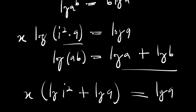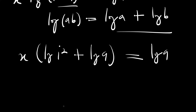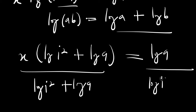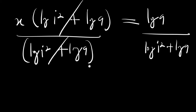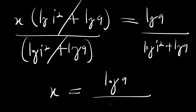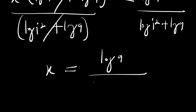The next thing is we need to solve for x, so we divide each part of this equation by log of i squared plus log of 9 — we do the same thing on both sides. This will cancel, and we are now left with x equals log of 9 divided by log of i squared plus log of 9.